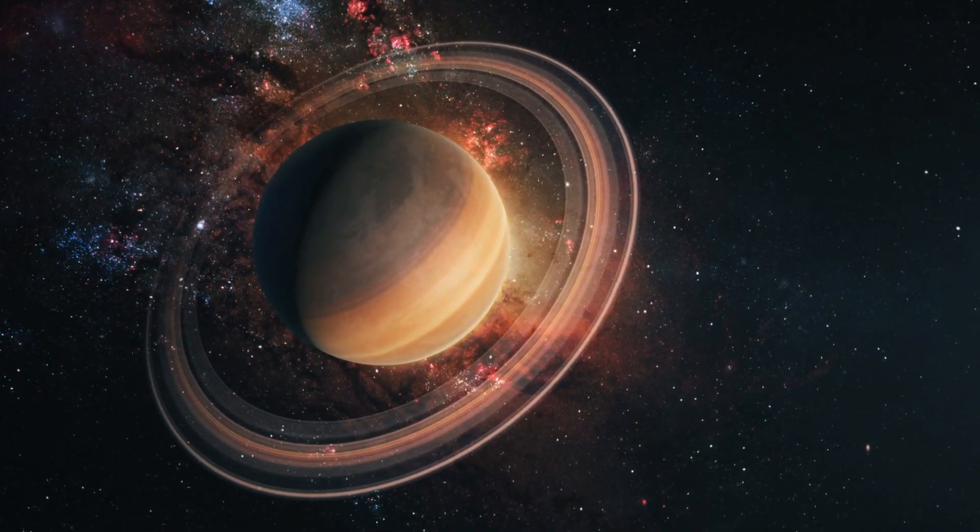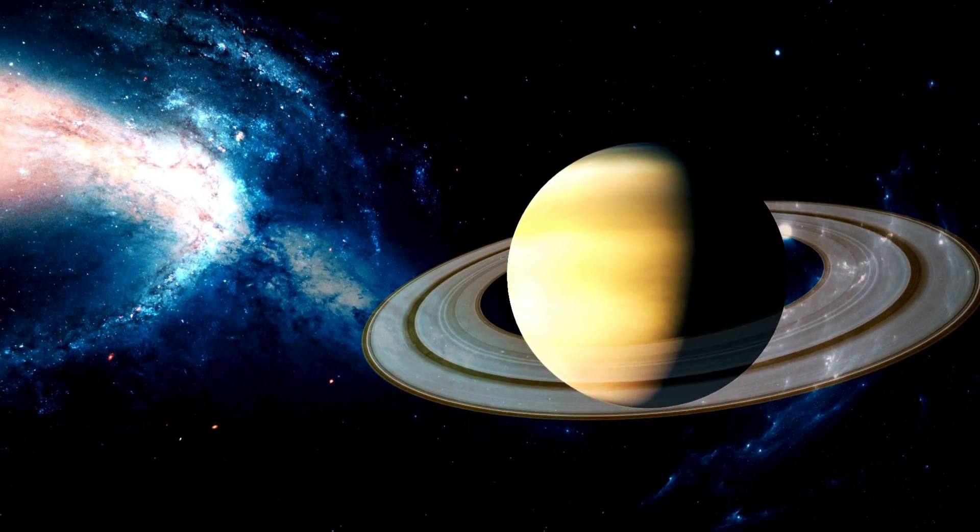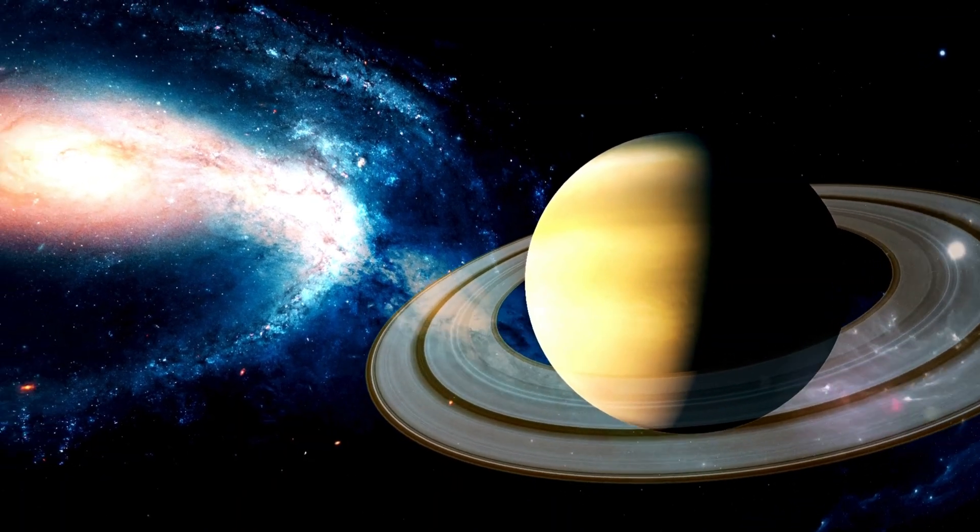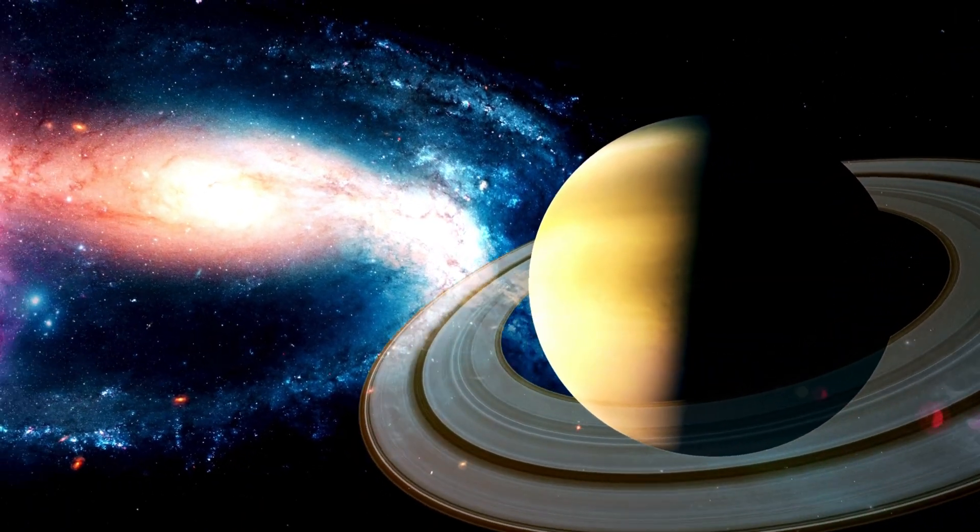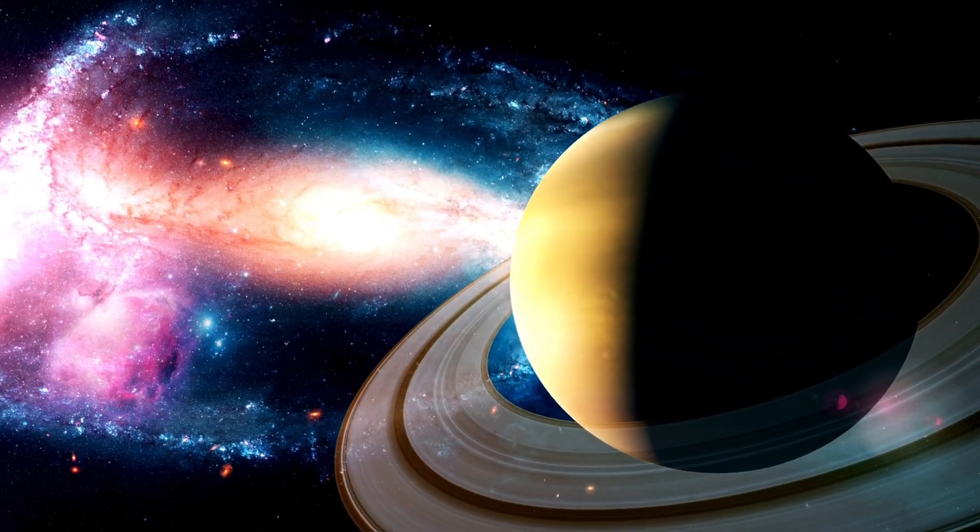Saturn, the ringed planet. Saturn is famous for its beautiful rings made of ice and rock. It's a huge gas planet and has many moons, too.